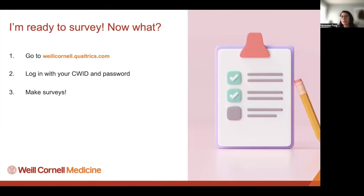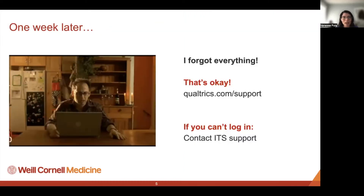If you've decided to use Qualtrics, all you need to do is go to weillcornell.qualtrics.com and log in with your CWID and password. That's it — you'll be in your Qualtrics account and can start making surveys right away.